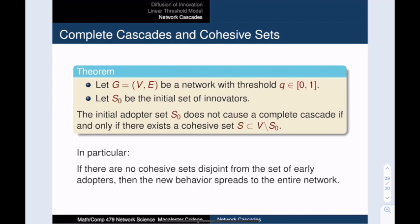This brings us to our main theorem about complete cascades. Cohesive sets are the bottlenecks to our cascade process. If we have a cohesive set that is outside of our seed set, then the process cannot spread to the whole network. And the reverse holds as well. If our cascade process halts before spreading to the entire network, then there must be a cohesive set that is outside our initial seed set.